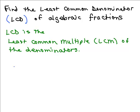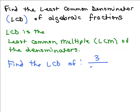I like to use a building-up approach. Here's an example: find the LCD of 3 over 2X squared and 5 over 6XY.